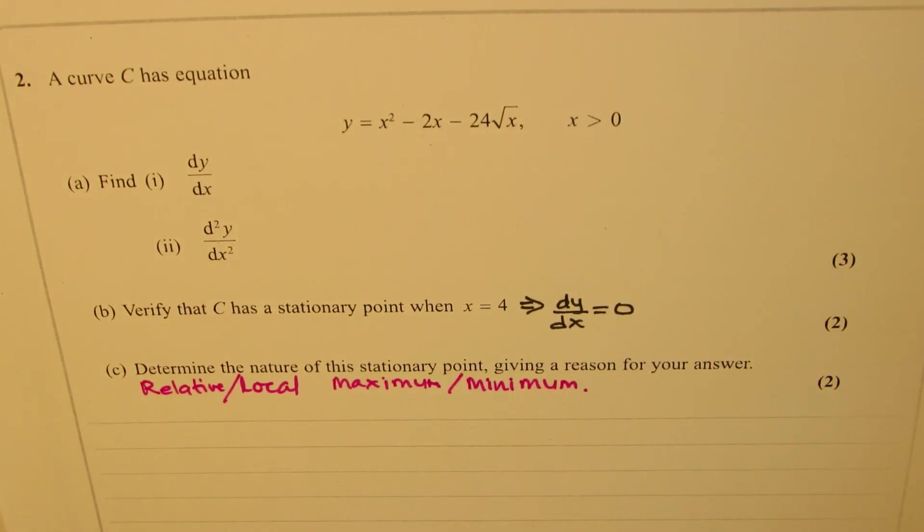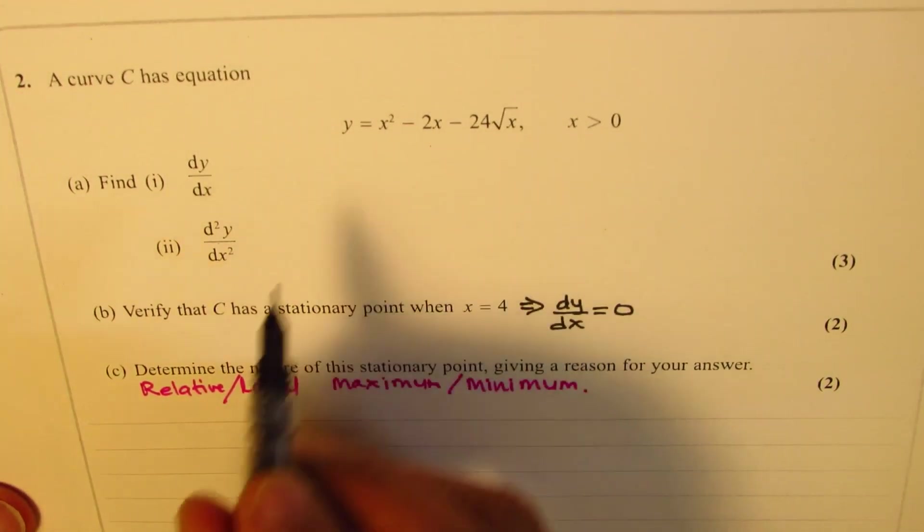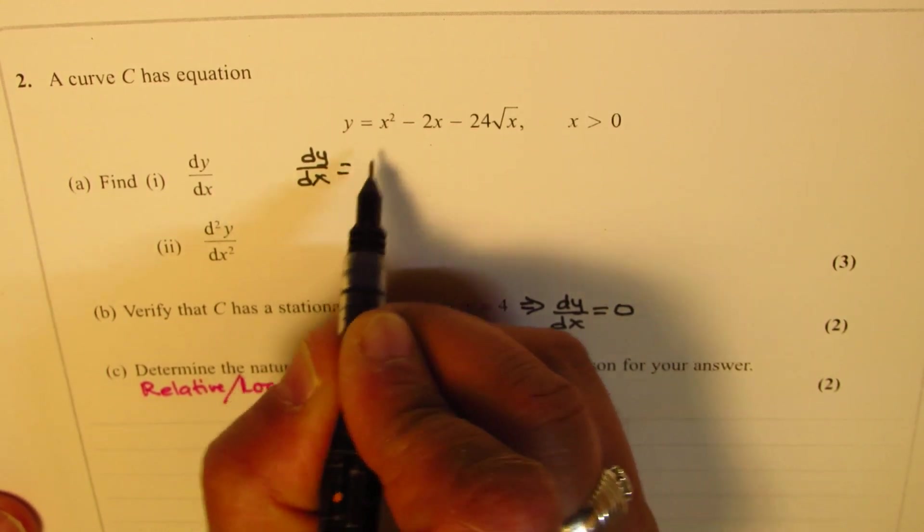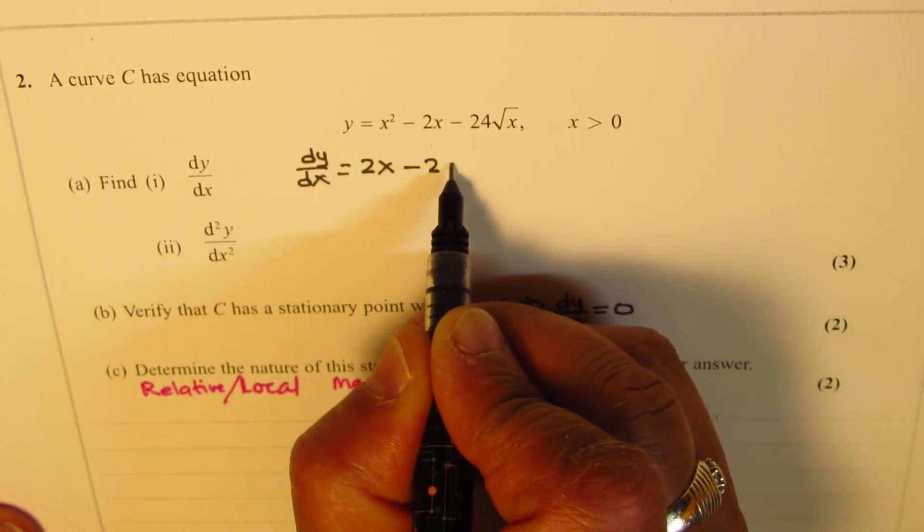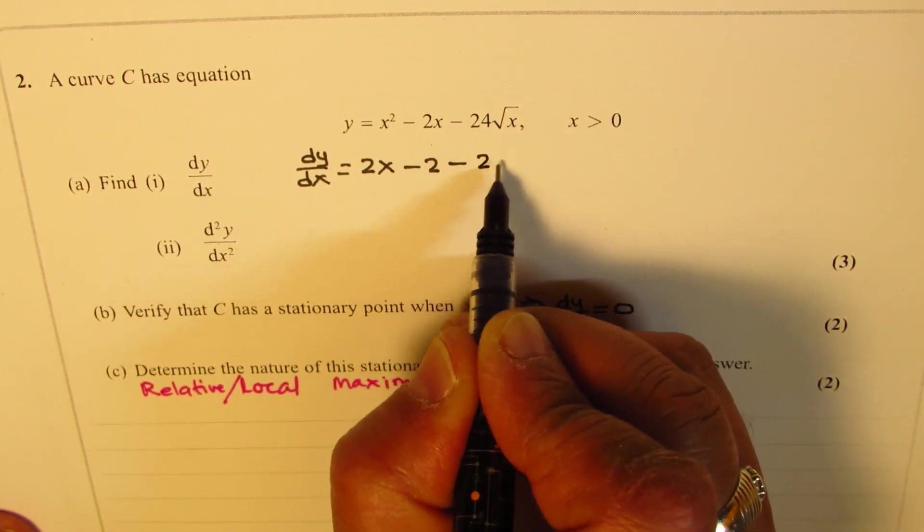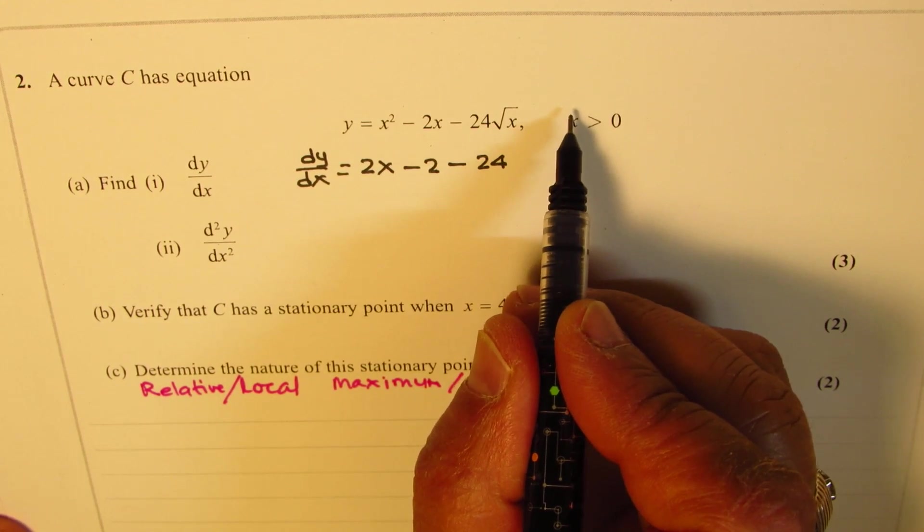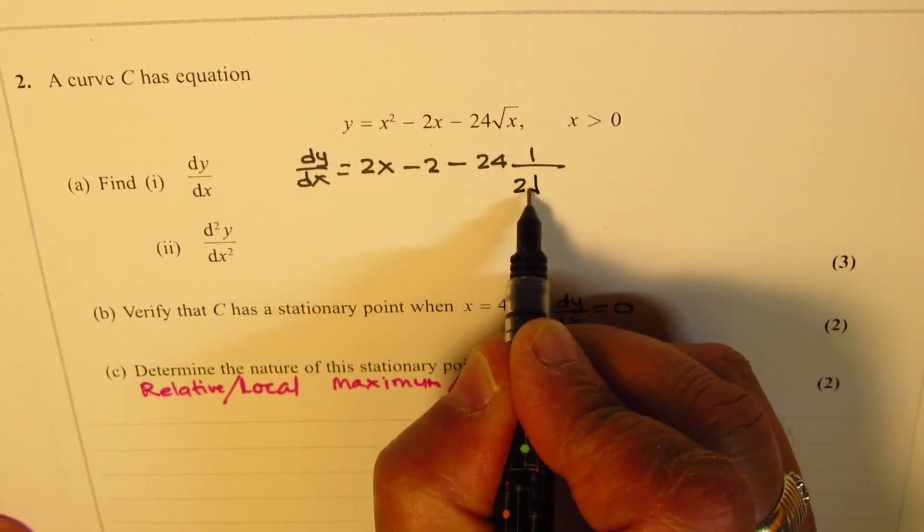So I hope this concept is clear. You can always pause the video, answer this question, and then look into my suggestions. So let's first find the derivative of this function. We have dy/dx equal to 2x minus 2 minus 24. Square root x derivative is half x to the power of minus half, so we could write this as 2 square root x.